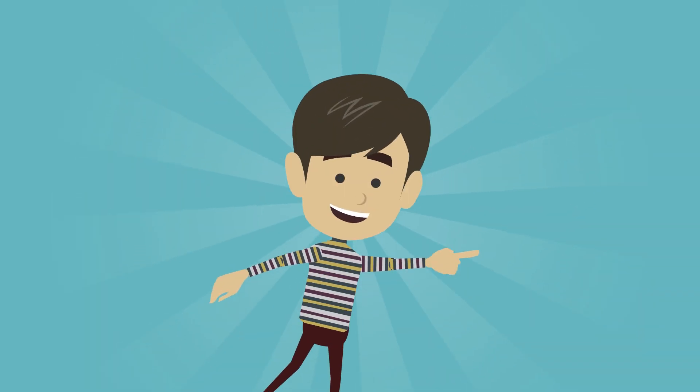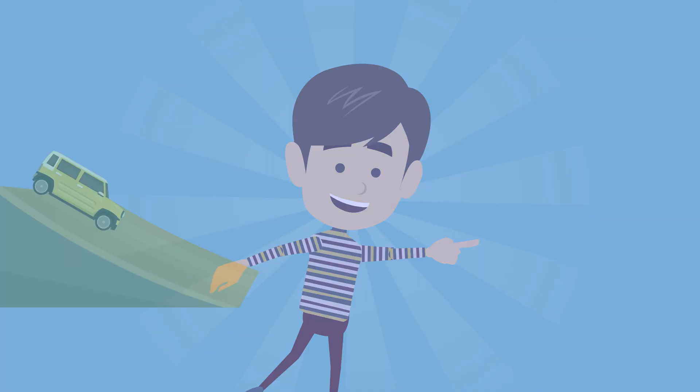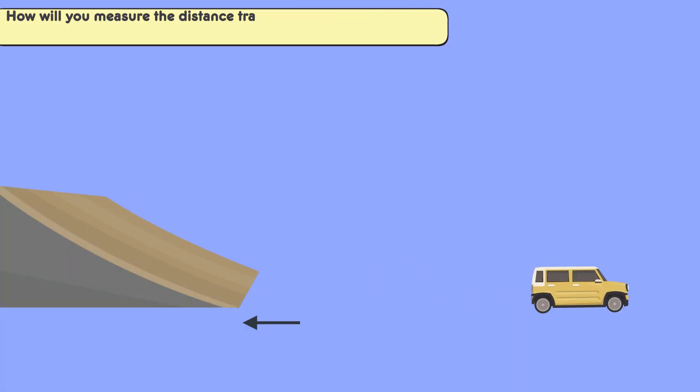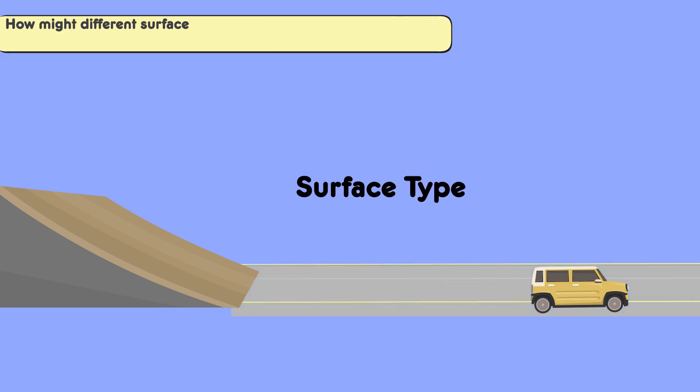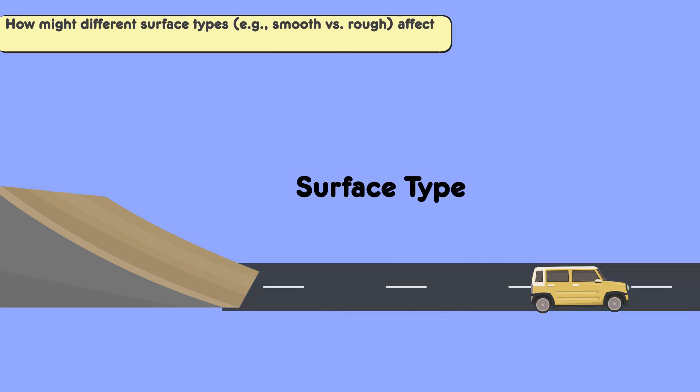As you consider this, think about these key questions: How will you measure the distance traveled by the toy car after it leaves the ramp? What tools might you need to accurately measure the angle of the ramp? How might different surface types, for example smooth and rough, affect the movement of the toy car?